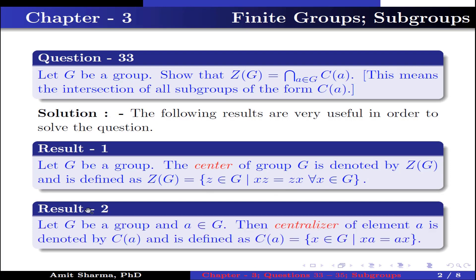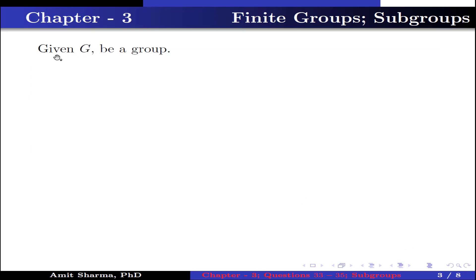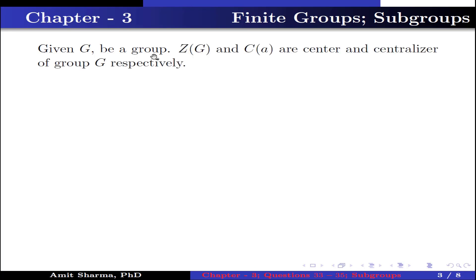Result number 2: Let G be a group and A ∈ G. Then the centralizer of element A is denoted by C(A) and is defined as C(A) = { x ∈ G such that xA = Ax }. Given: G is a group, and Z(G) and C(A) are the center and centralizer of group G respectively.